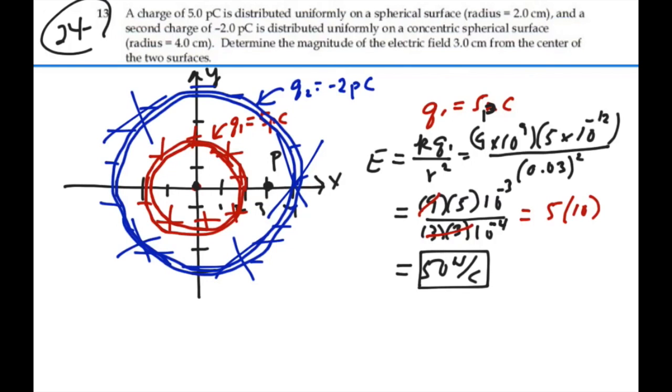As we've drawn it at point P, this E field will be emanating outward from the center from this positive, net positive charge. So, we'll have an E field, as I've drawn it, in the positive X direction, a value of 50 newtons per coulomb.